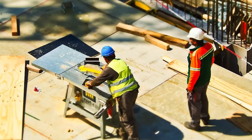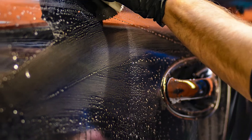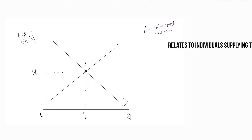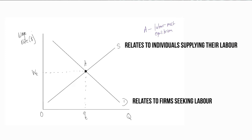Let's get started. The first place to start is to think about the labor market — the market for workers in an economy. If we think about the market itself, supply relates to the supply of workers, individuals who are willing and able to supply their labor to earn a wage. In the labor market, demand relates to firms, because firms are the group that want that labor. They want those people to help them produce goods and services and to earn revenue in the economy. Where the demand for labor intersects with the supply of labor, we get labor market equilibrium.